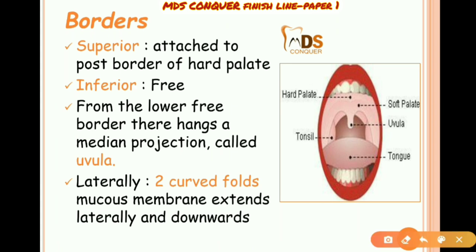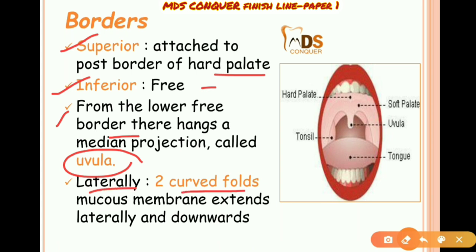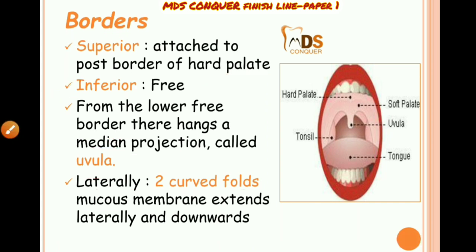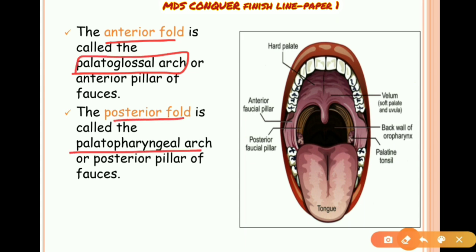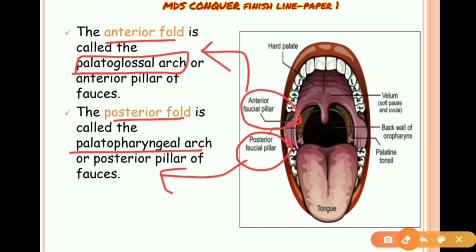Regarding borders: the superior border is attached to the hard palate; the inferior border is free. From the lower free border, the uvula is present. Laterally, two curved folds of mucous membrane extend downwards. The anterior fold is the palatoglossal arch and the posterior fold is the palatopharyngeal arch.